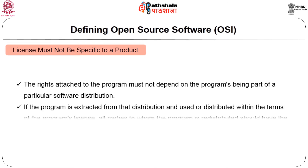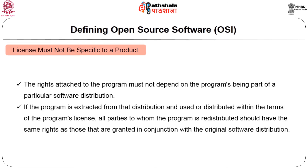The eighth point indicates the license must not be specific to a product. The rights attached to the program must not depend on the program being part of a particular software distribution. The license and product can be independent — a license cannot be said to apply only to a particular product; licenses can be applied to any product, as long as it is an open source license.